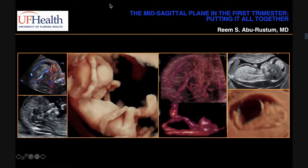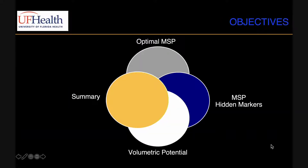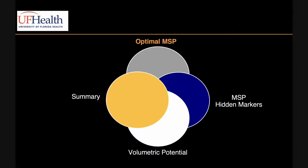I am hoping that in the next 30 minutes I will convince you that the most important view to get in the first trimester is this midsagittal plane of the fetus. I have no disclosures. What I am hoping to cover is we'll talk about the optimal midsagittal plane, the various hidden markers you've heard about over the past two and a half days, the volumetric potential, and end with a summary.